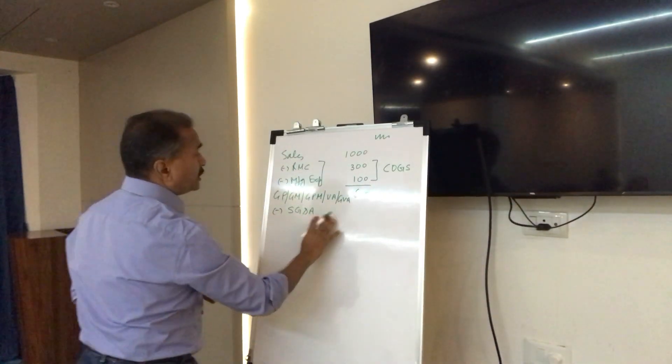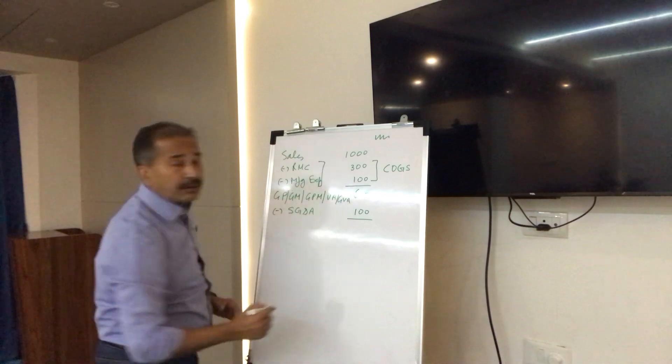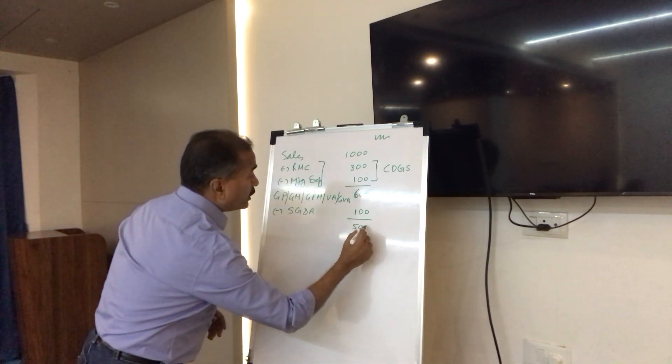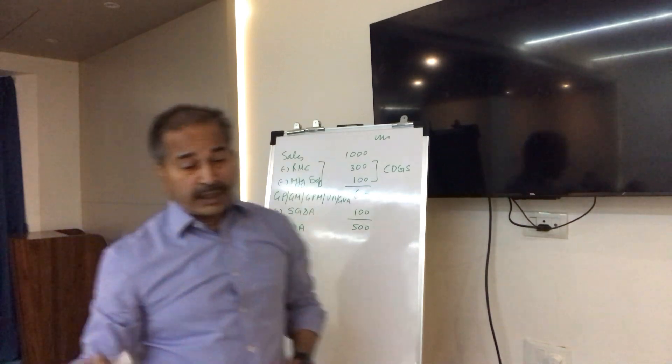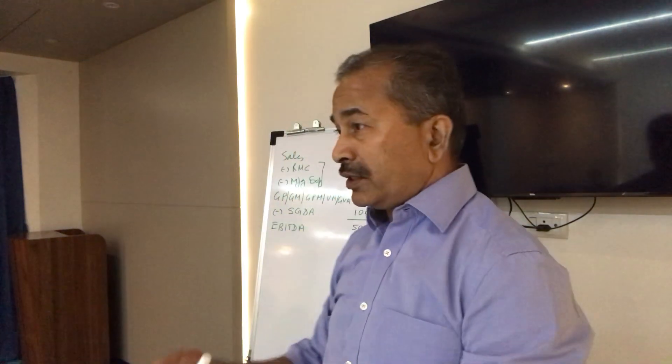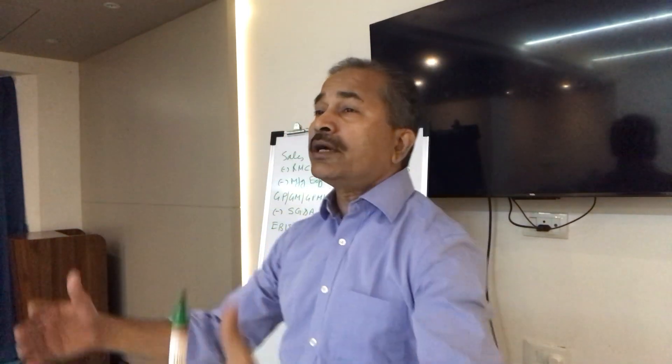After deducting SG&A of 100 from gross profit of 600, what remains in your hand is 500. That 500 is called EBITDA. Irrespective of whether you are in manufacturing, fintech, or other products, I am sure you have heard the word EBITDA thousands of times in the past years. You can go to any financial channel or newspaper and you will see EBITDA everywhere. If the whole world is talking about EBITDA, it must be important.